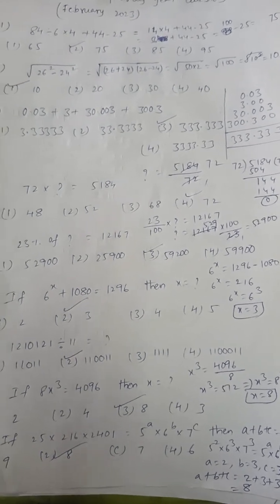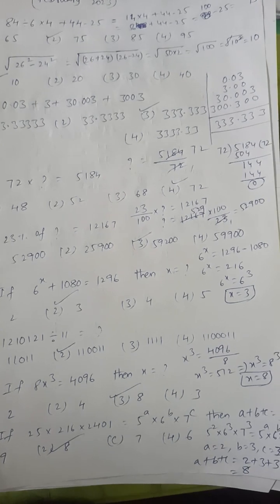512 can be written as 8 cube. Since bases are equal, powers are also equal. So x equals 8.